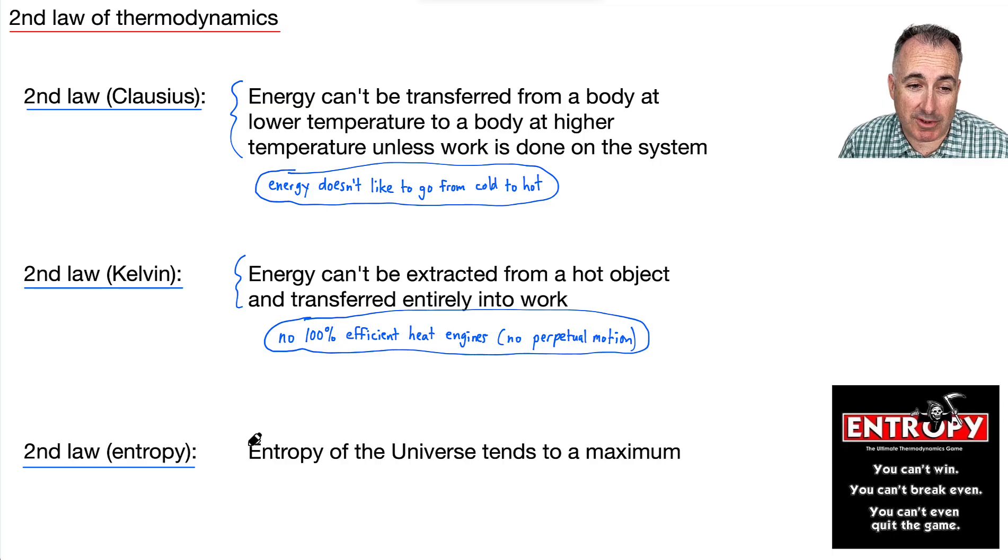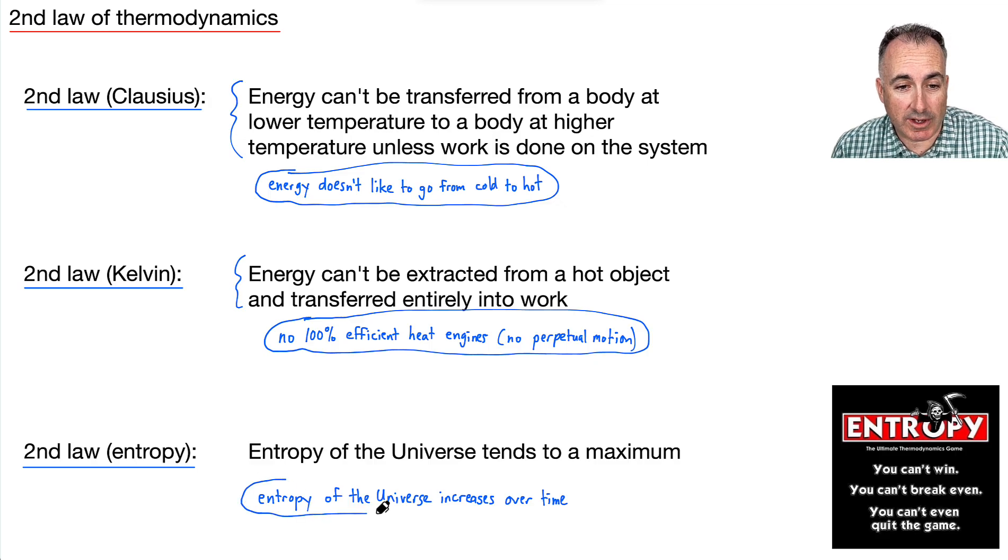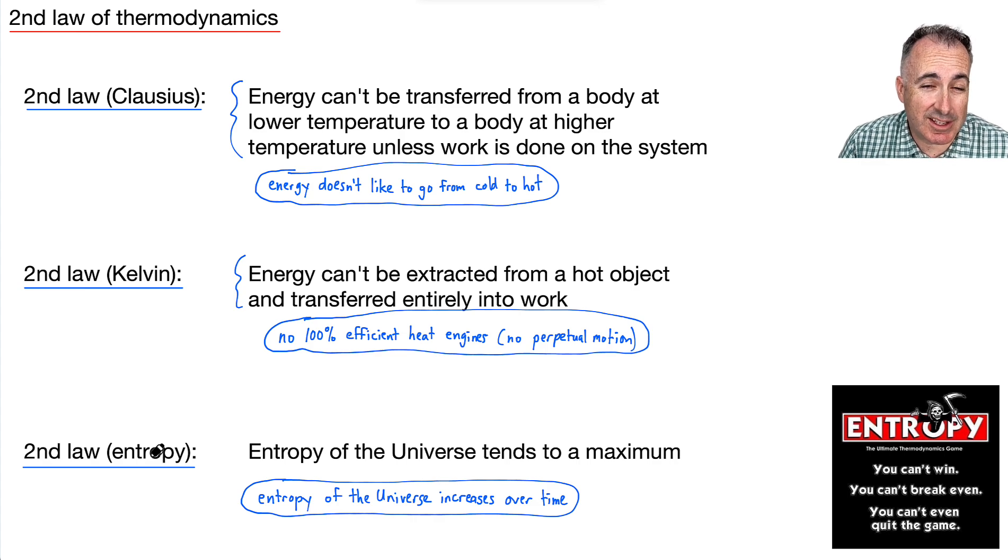We've got second law, the entropy version, which says that the entropy of the universe tends to a maximum. So what does that mean? It means that the entropy of the universe will increase over time. So if you leave it long enough, even though entropy might decrease locally, overall in the universe, things will increase always. That's why we call this an arrow of time.